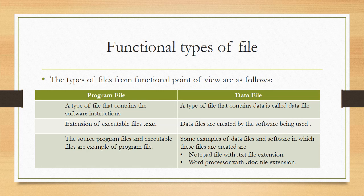Normally, the extension of a program file is .exe. Those are called executable files which have the extension .exe — files which can be executed. The second type is a data file. The type of file that contains data is called a data file — these are files in which you have stored data.